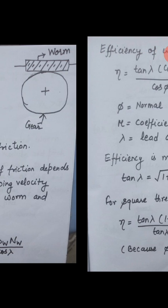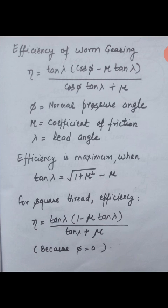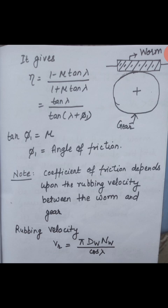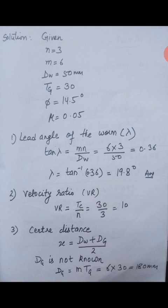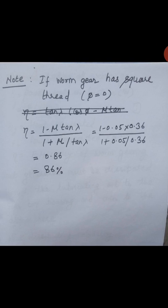One correction to note from the previous slide: in the formula for efficiency of a square thread worm, the correct formula is efficiency equals (1 minus μ·tan(λ)) upon (1 plus μ divided by tan(λ)). Please note this correction. The correct formula has been used in the numerical solution.